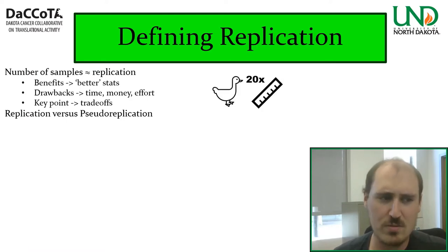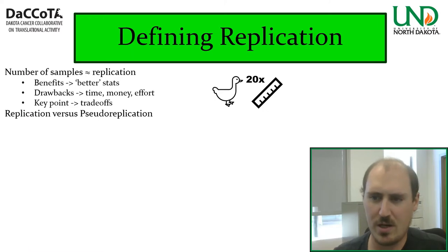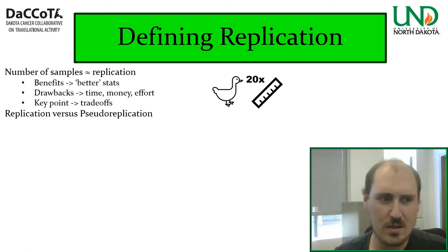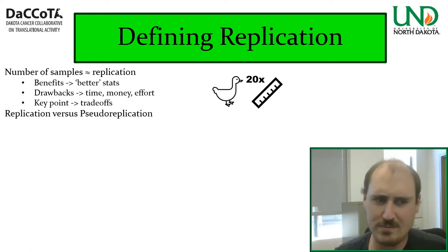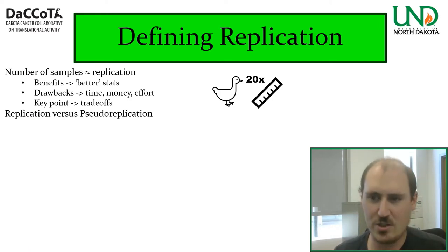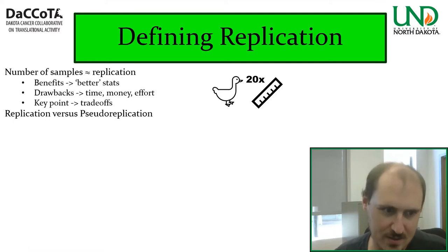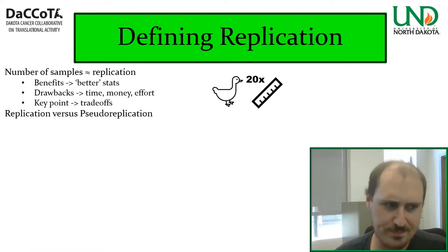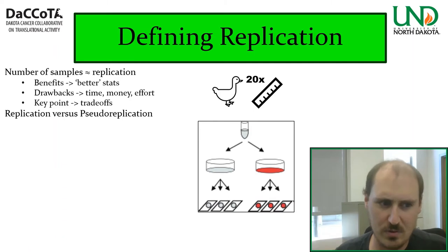We're entering the danger zone: not all replication is good. There's a difference between true replication and pseudo-replication. Here's a clear example of pseudo-replication: say we want to get the average height of ducks, so we measure the height of one duck and then repeat that measurement 19 more times for a total of 20 measurements. Is this true replication? No — it's not measuring different samples. It's just measuring the same duck. That is the core of what pseudo-replication is.